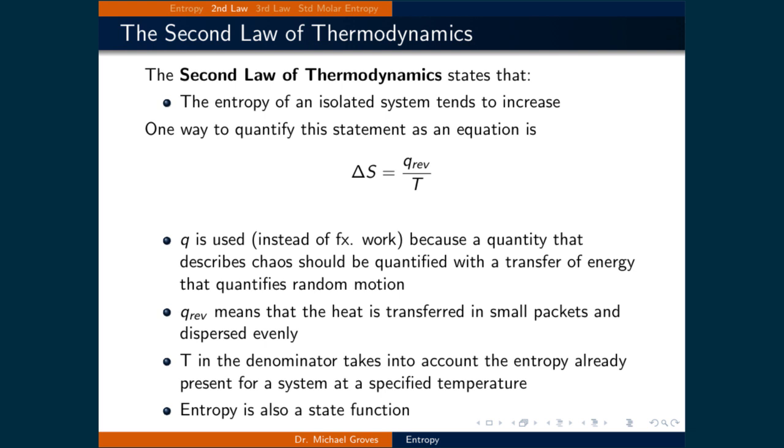Because a quantity that describes chaos should be quantified with a transfer of energy that quantifies random motion. Qreversible means that the heat is transferred in small packets and dispersed evenly. Temperature in the denominator takes into account the entropy already present for a system at a specified temperature. And entropy is a state function, so it's path independent.